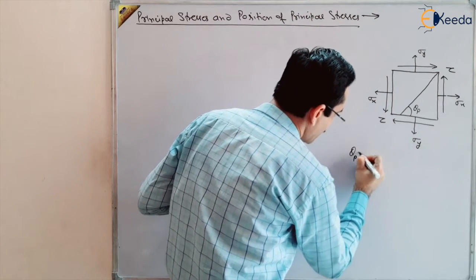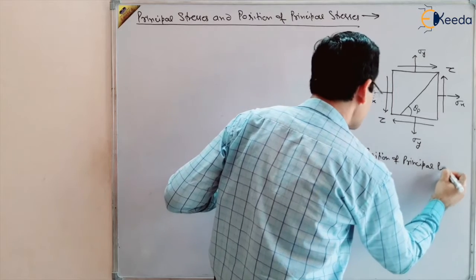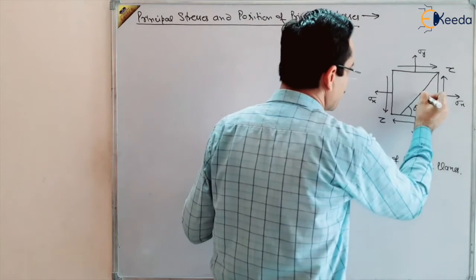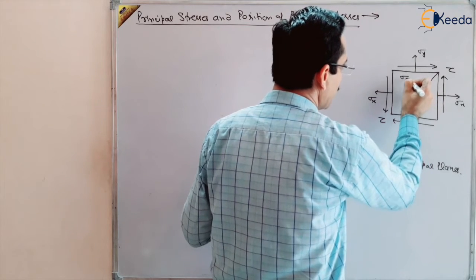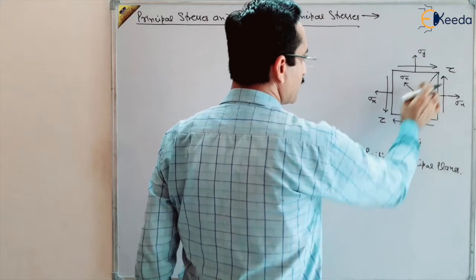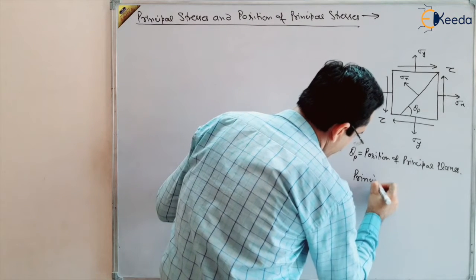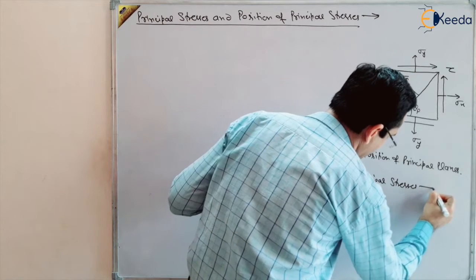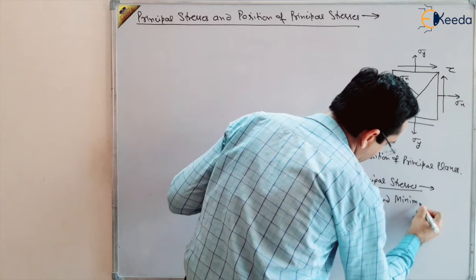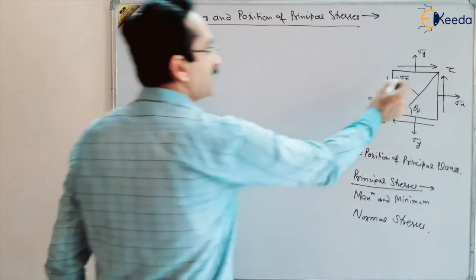I am calling this plane theta p. Theta p means the plane where principal stress is acting. Our angle theta p is the position of principal planes. As you know, at the position of principal planes, there is no shear stress. Only normal stress will be acting. Tau will be equal to zero, or sigma t will be equal to zero. So, what are principal stresses? Principal stresses are the maximum and minimum normal stresses, as we have already discussed.